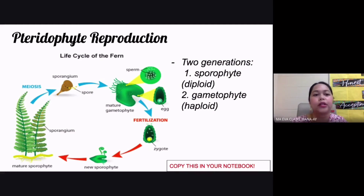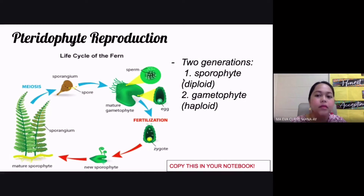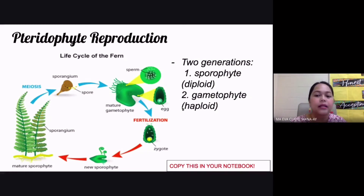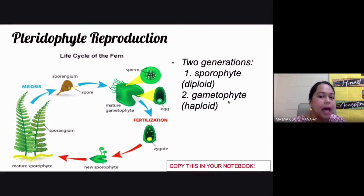In the alternation of generations in a fern, there are two generations: the sporophyte, which is the diploid stage, and the gametophyte, which is the haploid stage. Can anyone tell us the difference between diploid and haploid? You learned this in Bio 1.